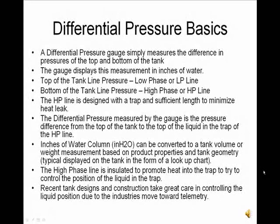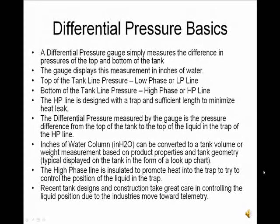The HP line is designed with a trap and sufficient length to minimize heat leak. The differential pressure measured by the gauge is the pressure difference from the top of the tank to the top of the liquid in the trap of the HP line. Inches of water column can be converted to tank volume or weight measurement based on product properties and tank geometry, and is typically displayed on the tank in the form of a lookup chart.